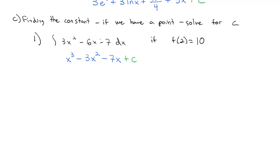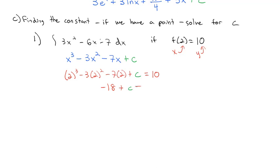To find C, we know that when x equals 2, the whole expression equals 10. Plugging in: 2 cubed minus 3 times 2 squared minus 7 times 2 plus C equals 10. That gives 8 minus 12 minus 14 plus C equals 10, so negative 18 plus C equals 10. Adding 18 to both sides, C equals 28. Our final anti-derivative is x cubed minus 3x squared minus 7x plus 28.